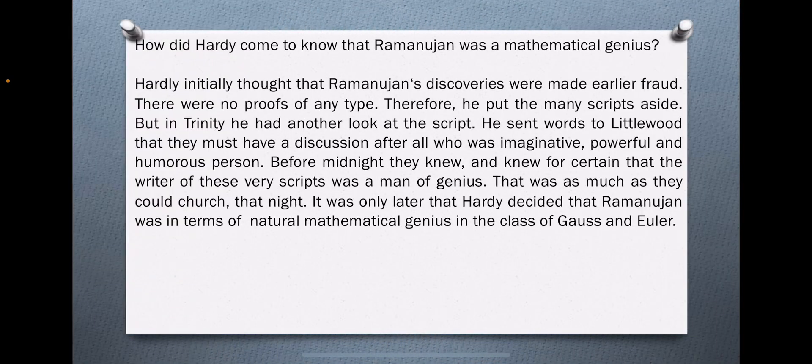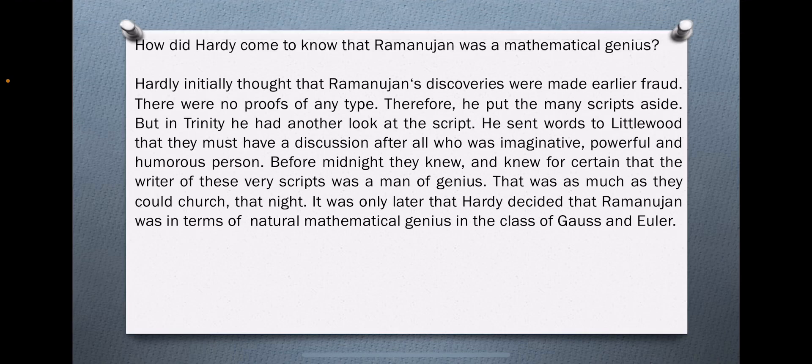How did Hardy come to know that Ramanujan was a mathematical genius? Hardy initially thought that Ramanujan's discoveries had been made earlier by others. The theorems in the manuscript had no proofs attached to any of them. Because there were no proofs, Hardy put the manuscript aside.